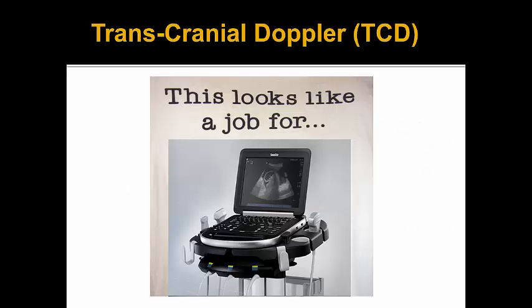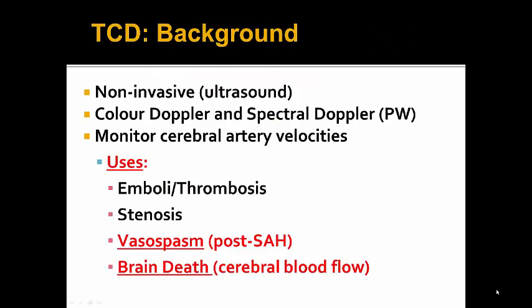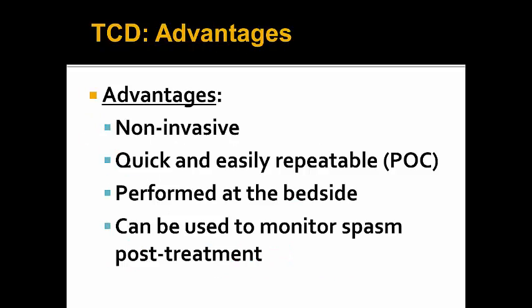Getting to transcranial Doppler: much like other point-of-care modalities, TCD is a non-invasive ultrasound-based modality which uses color Doppler and spectral Doppler — specifically pulse wave — to monitor cerebral artery velocities in the head. The uses are multifaceted. We can look for emboli or thrombosis of various vessels in the brain, stenosis, but specifically in this lecture we'll be talking about vasospasm post-subarachnoid hemorrhage and looking for cerebral blood flow and cerebral circulatory arrest as a sign of impending brain death. The advantages are that it's non-invasive, quickly and easily repeatable, can be performed at the bedside, and can be used to monitor spasm post-treatment.